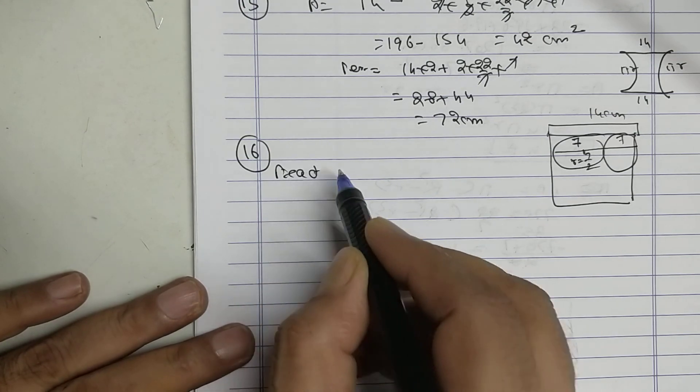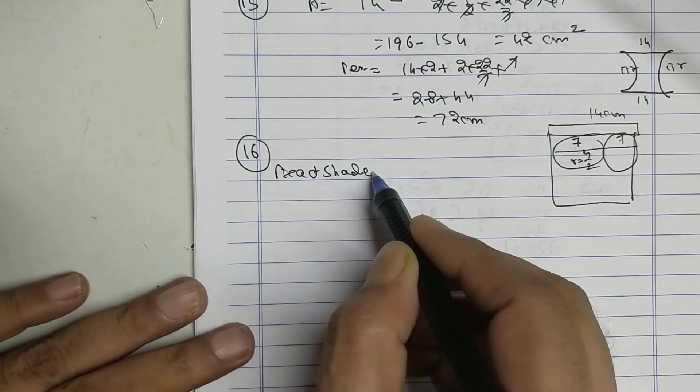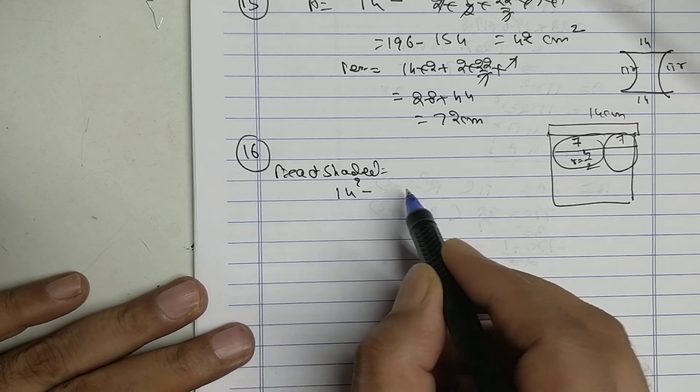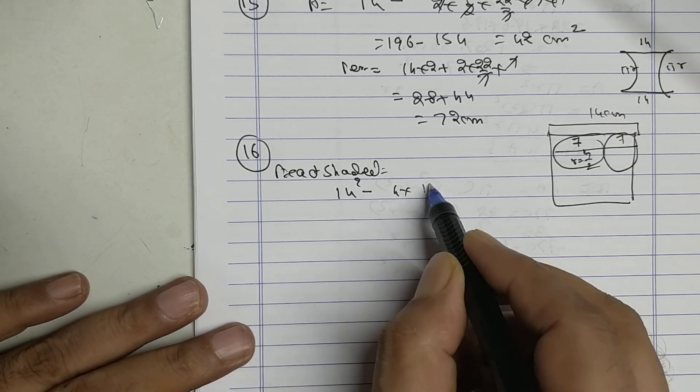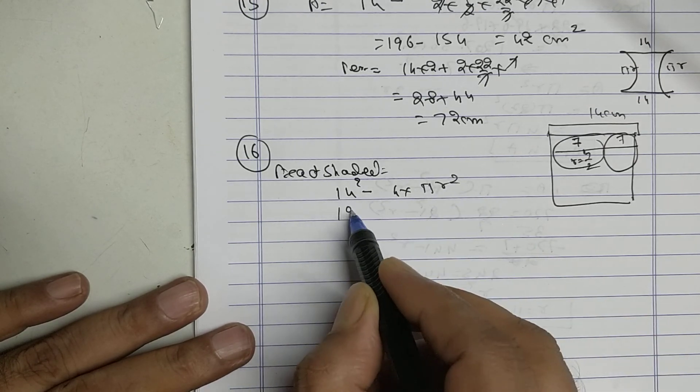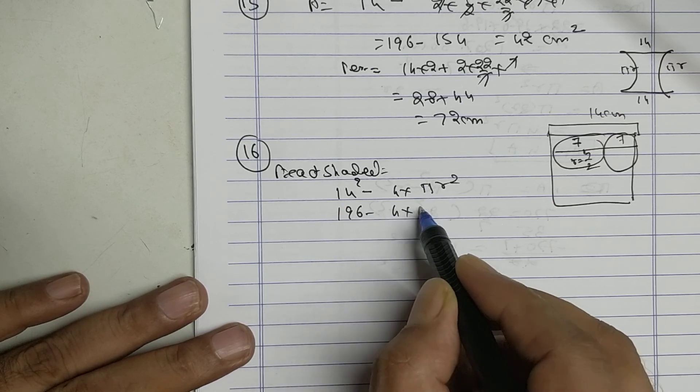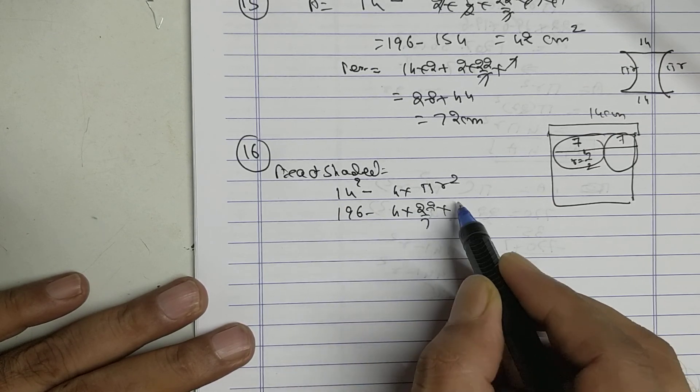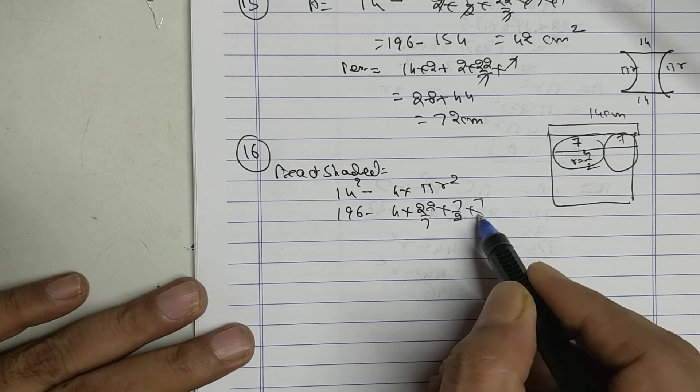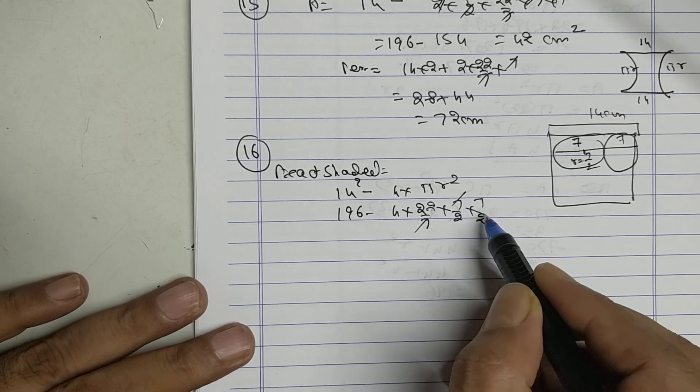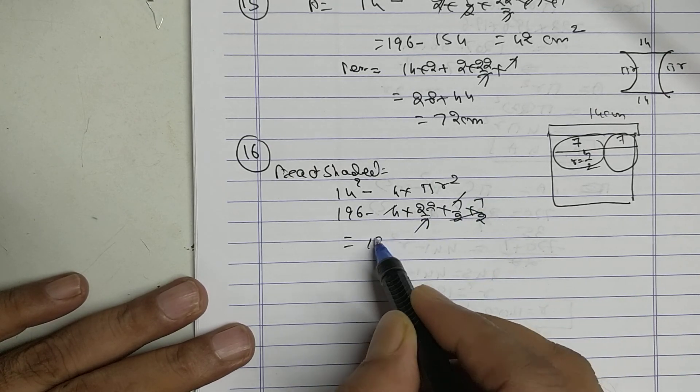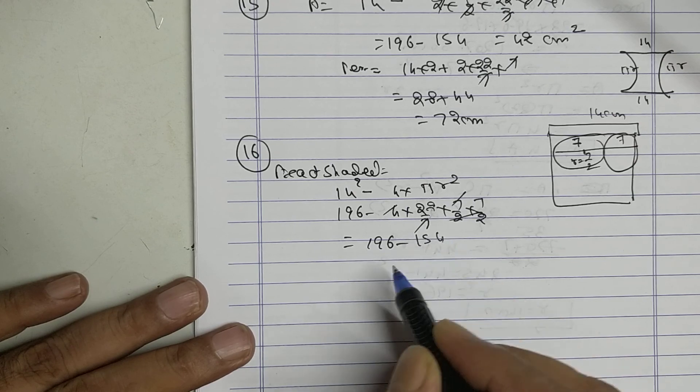Area of shaded region: from the square minus four circles, 196, radius is...